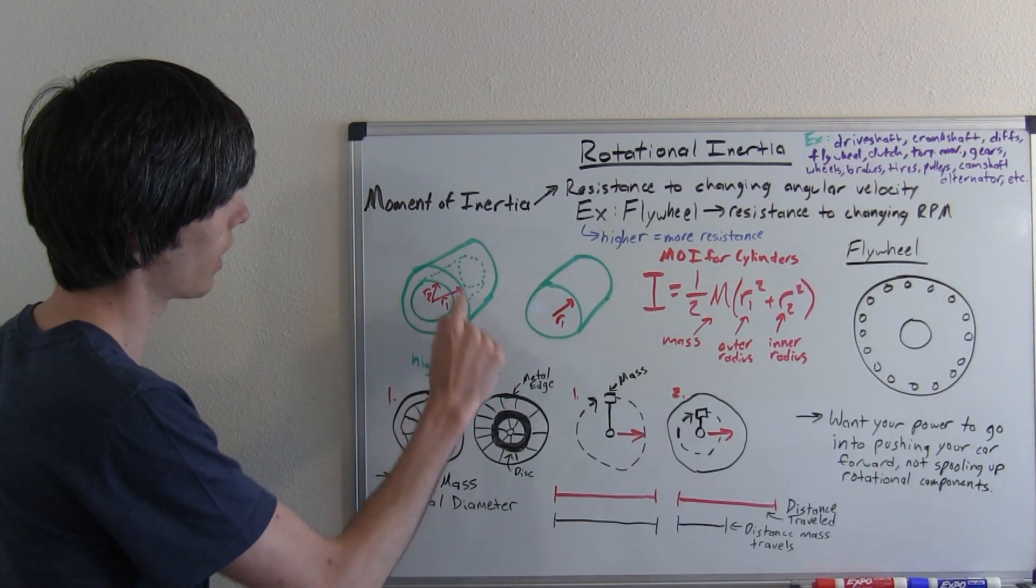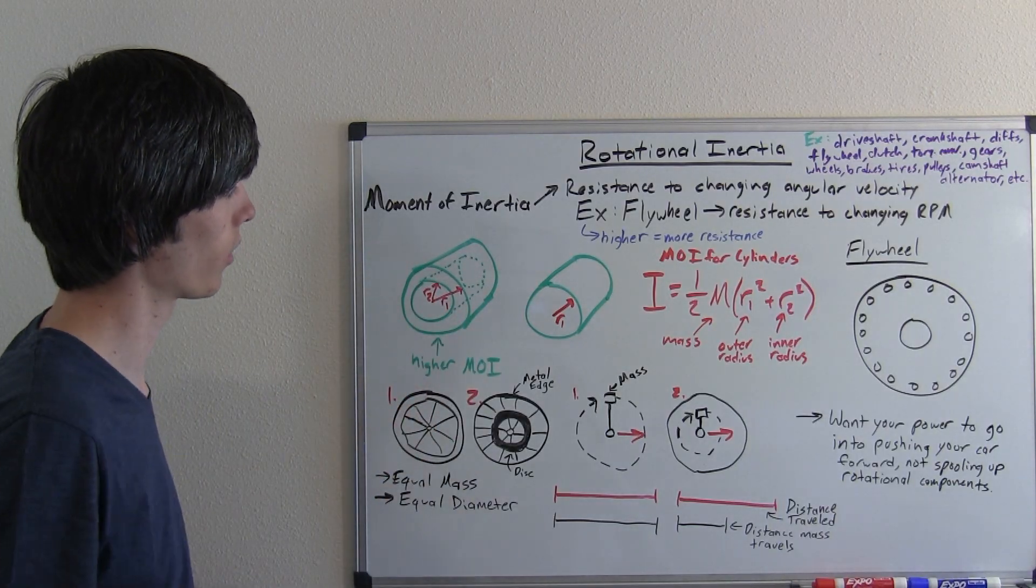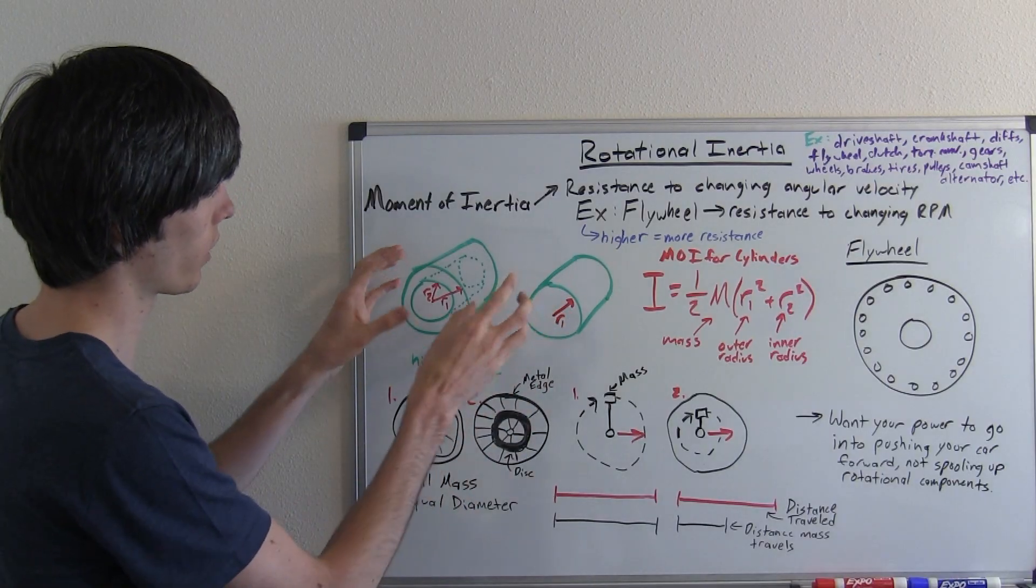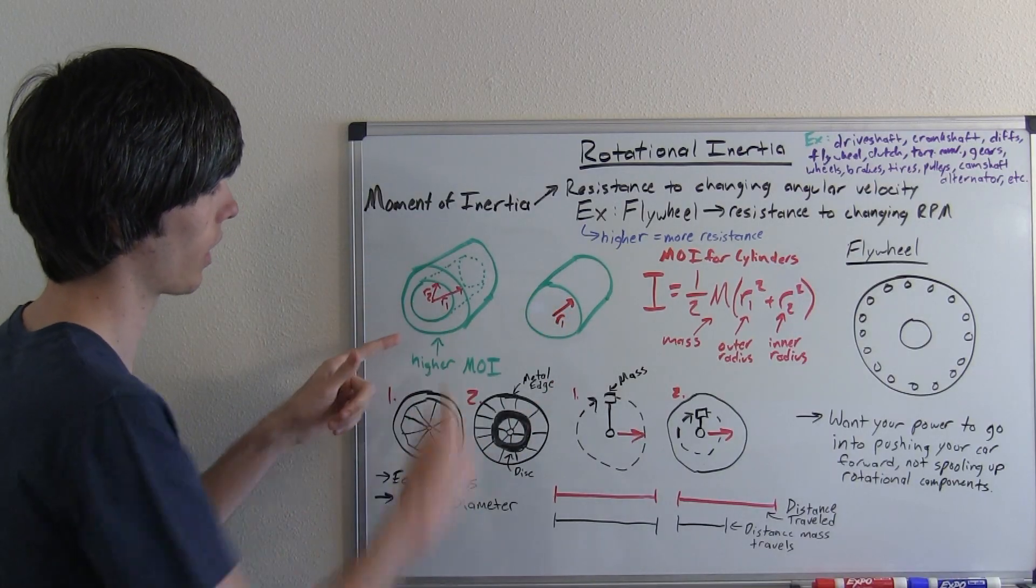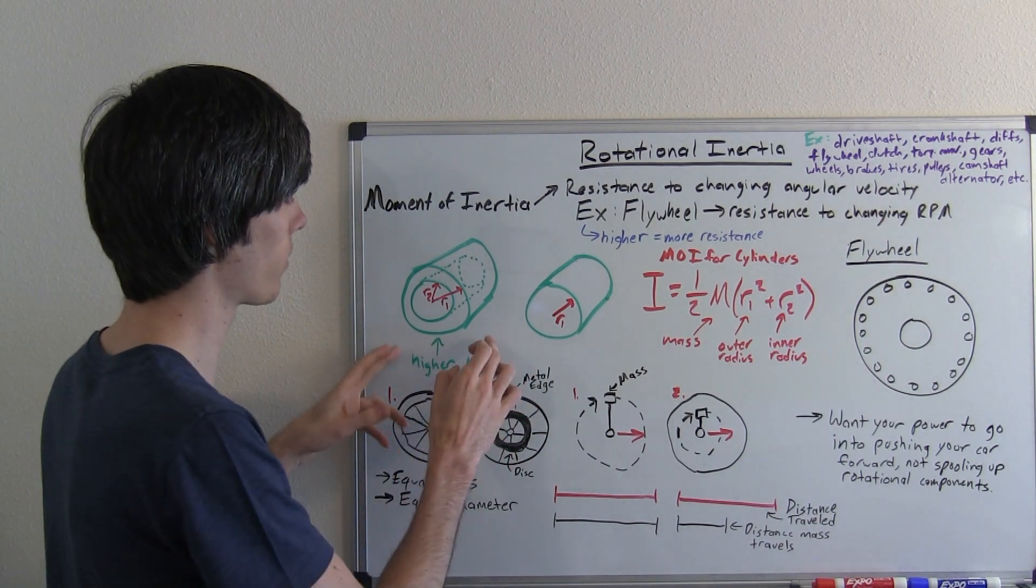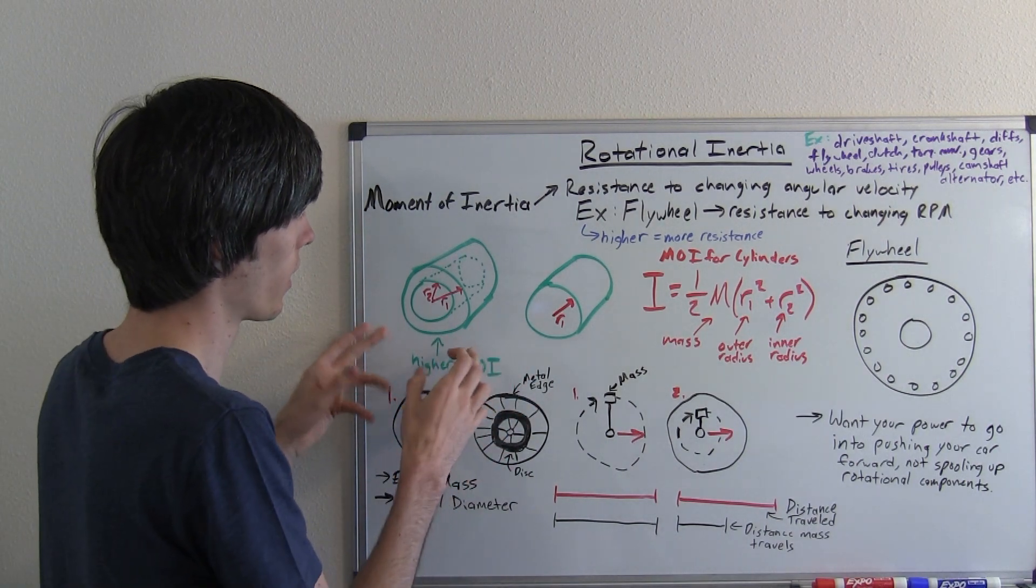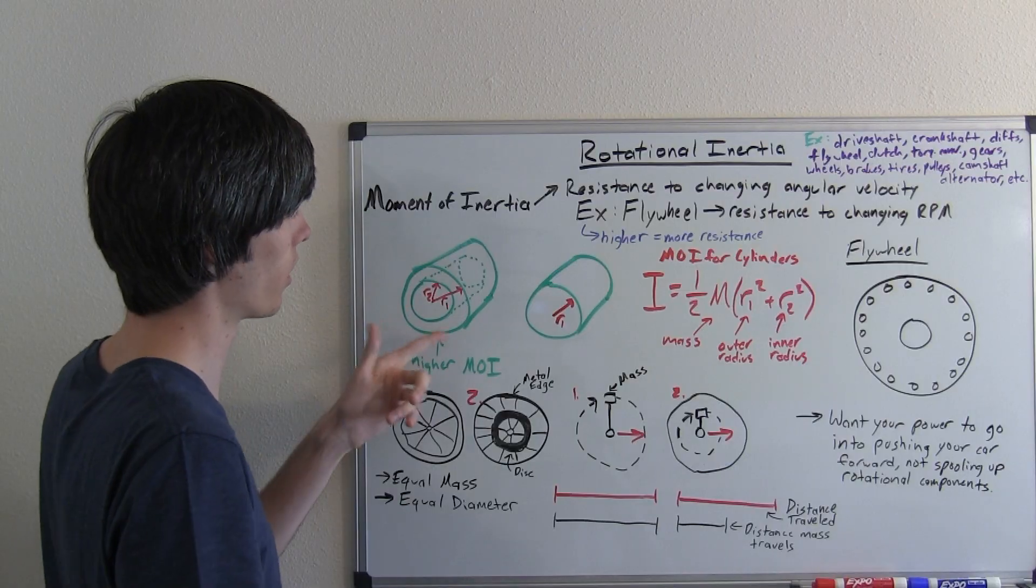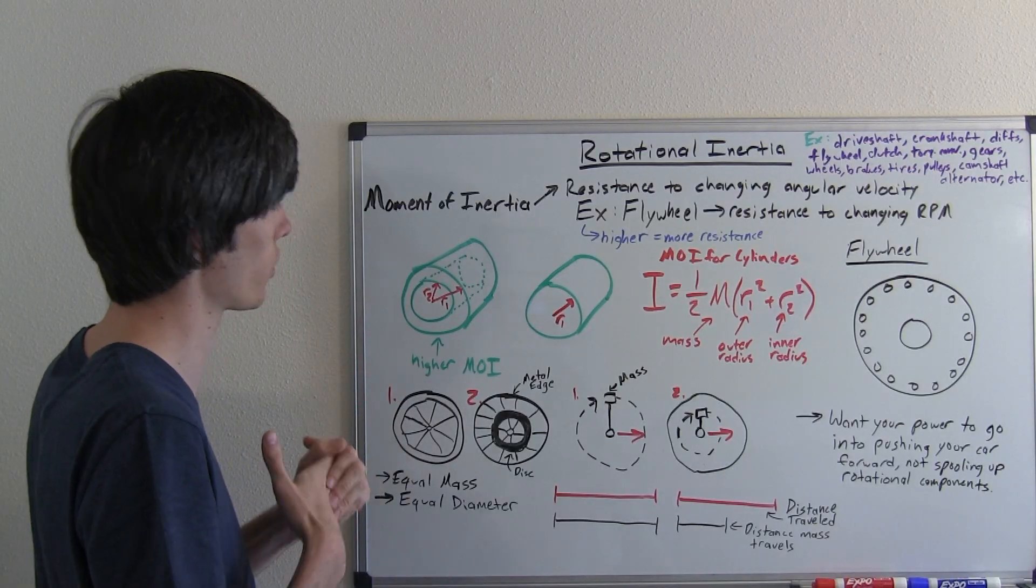Because it's hollowed out in the center, it has a higher moment of inertia. These objects are the exact same dimensions, this one's just hollowed out and they're both the same weight. What it means that this one has a higher moment of inertia is that it's more difficult for this one to rotate. It resists change more.